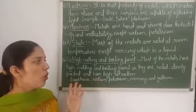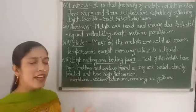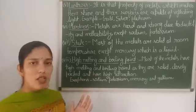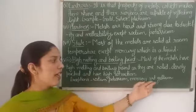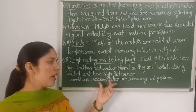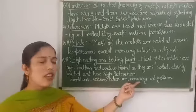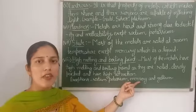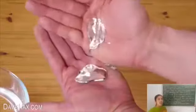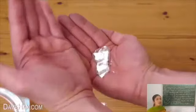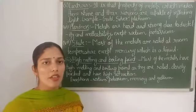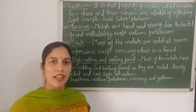Metals are solid, closely packed, and have high attraction between their particles, so they are very hard. However, there are exceptions — sodium, potassium, mercury, and gallium have low melting and boiling points. Sodium and potassium are very soft, mercury is already present as a liquid at room temperature, and gallium is very soft — it starts to melt with the heat of our palm when we keep it there. So this is all about the physical properties of metals. Thank you.